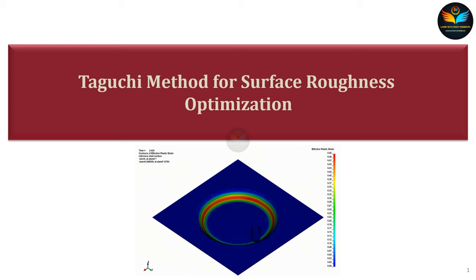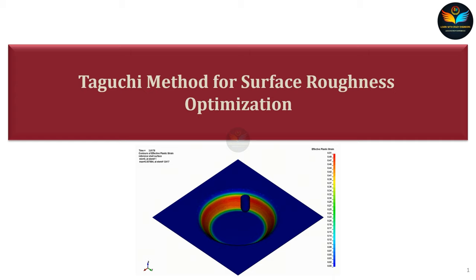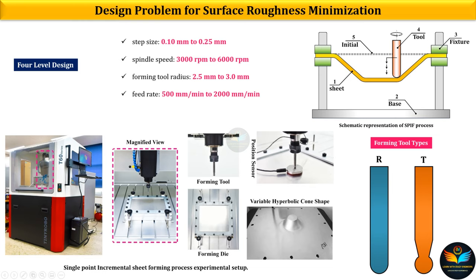In upcoming slides we will learn which application we are going to use this method for, what the target is, and whether the optimization is about minimization, maximization, or setting a target value. We will model the optimization problem for a single point incremental sheet forming process. In this technique, we design a toolpath and use it to make small step-by-step localized incremental deformation on sheet metal using one hemispherical forming tool.